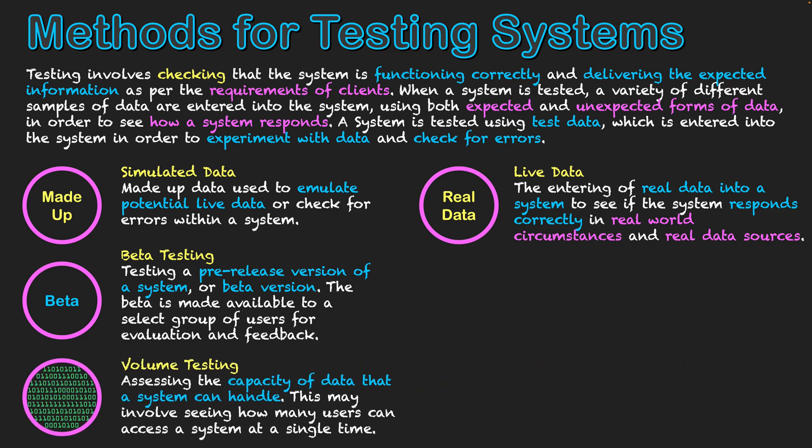The next type is volume testing, which may be done alongside online beta tests. Here we're testing the capacity of data a system can potentially handle. It could be a single system where we put in as much data as possible to see if integrity starts to slow down. Or in an online setting, we check whether integrity drops when many users access the system simultaneously — potentially requiring more servers or a more distributed network to spread the volume. We also consider reducing file sizes and processing demands so the system can run efficiently under heavy user load.